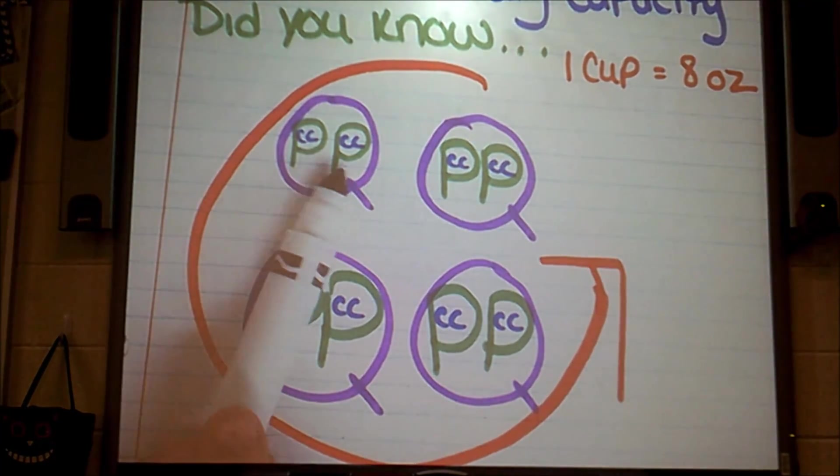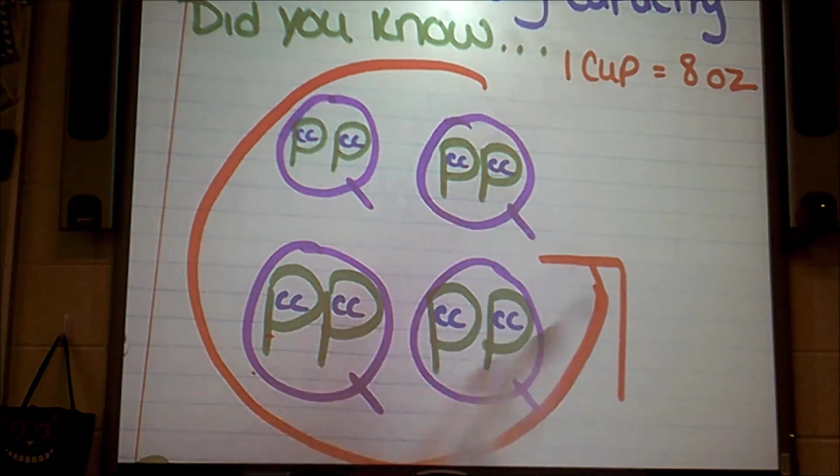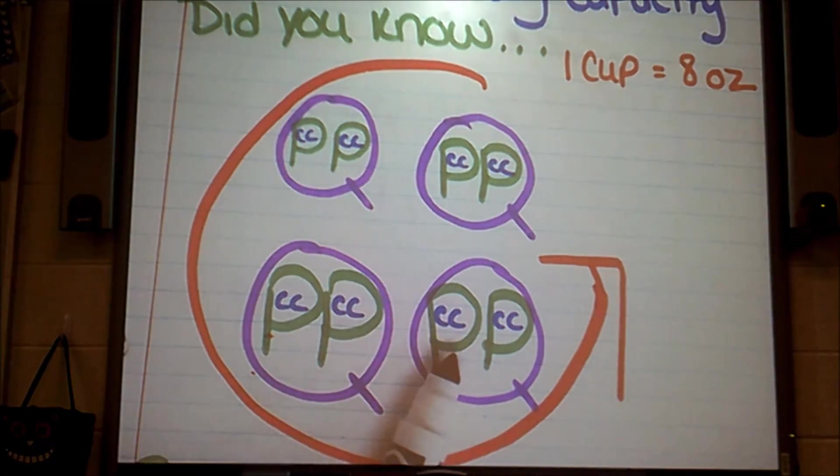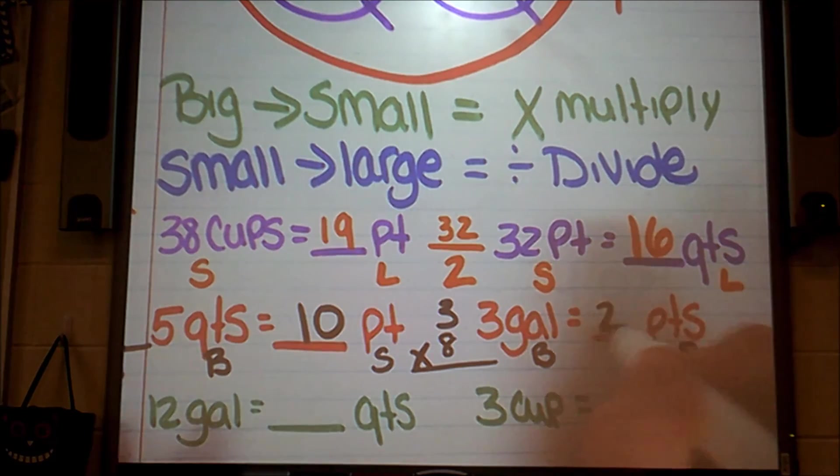One, two, three, four, five, six, seven, eight. Eight times three is 24.